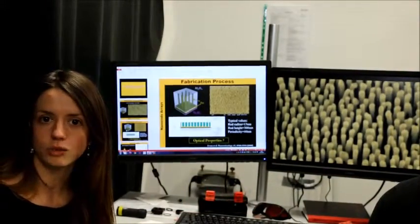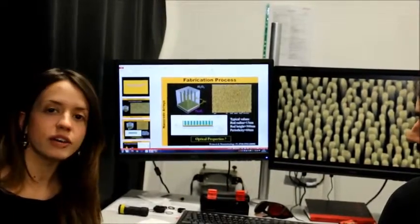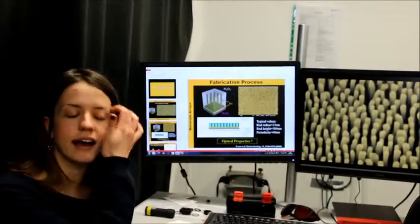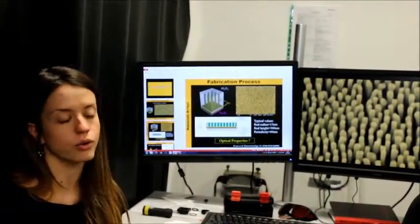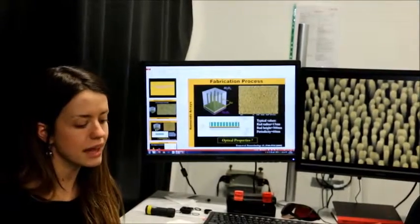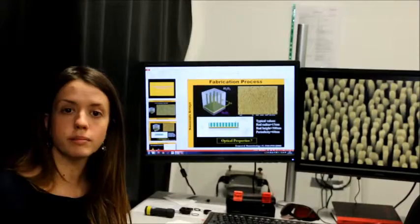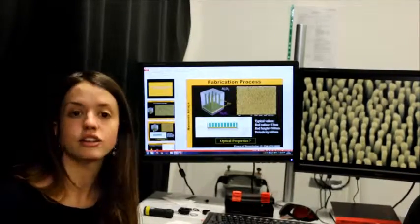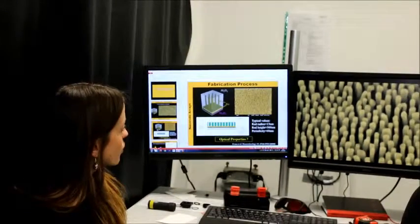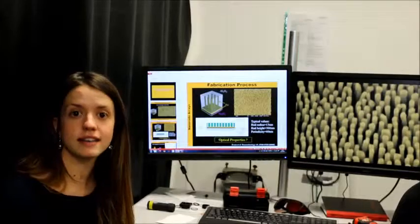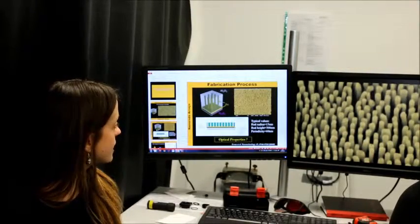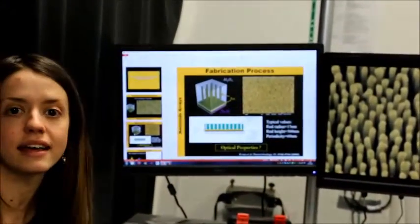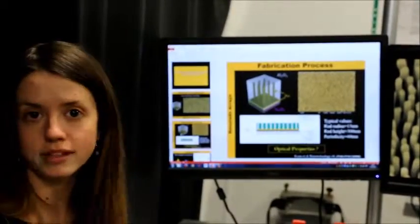In the case of plasmonic metamaterials, we have some metallic inclusions in dielectrics or in a functionalized matrix. And these metallic inclusions will behave collectively in a very peculiar way when they interact with light. So the main structure that we fabricate and characterize here is a metamaterial made of a regular array of vertically aligned gold nanorods.